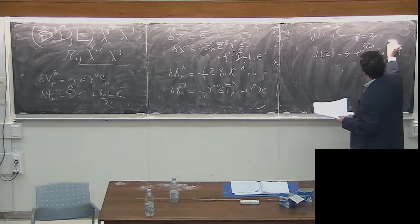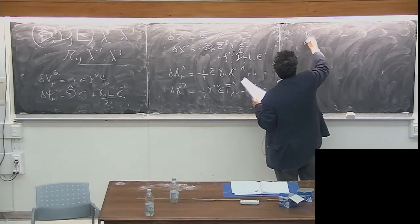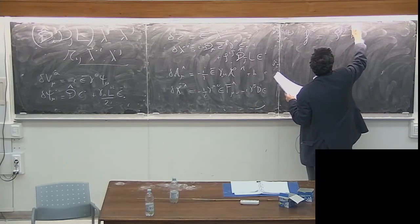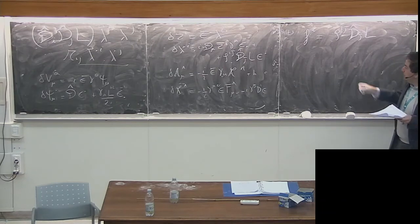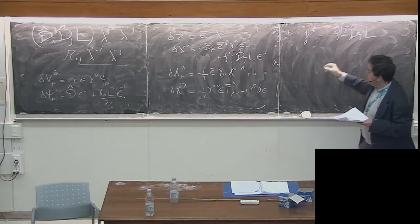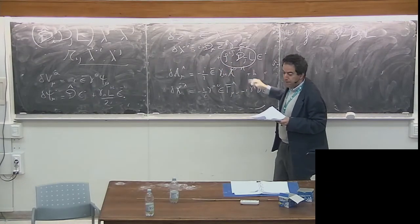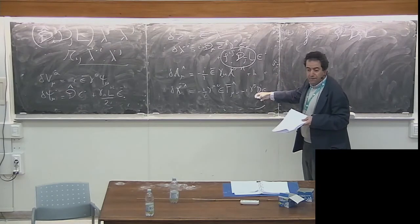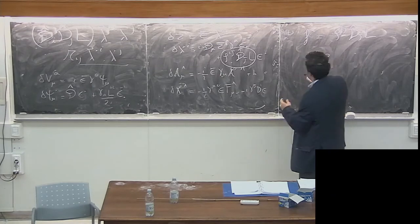And delta A^lambda_mu = minus i times the same as before, plus Hermitian conjugate; delta chi_lambda = minus (1/2) gamma^{mu nu} epsilon F^lambda_{mu nu} minus i gamma_5 d epsilon. We have already eliminated the auxiliary fields. The auxiliary fields are: F^I = g^{I jbar} D-hat_{jbar} L. This is the auxiliary field in supergravity — the so-called F-term — and we read it from the transformation property of lambda.